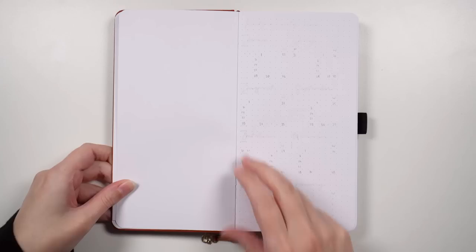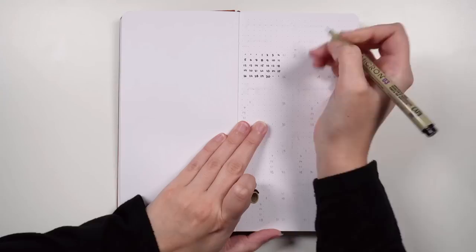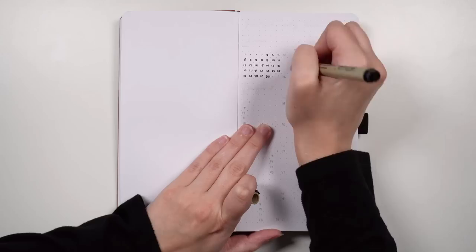Flipping over and getting into the first actual page of the notebook, or the first dot grid page, I'm going to be putting in a year at a glance. I know some people don't find a year at a glance particularly helpful, especially if they put many calendars on their future log.